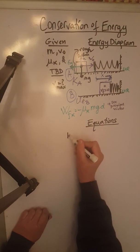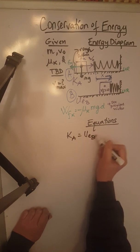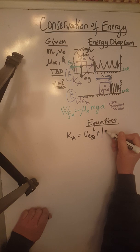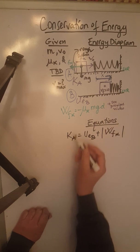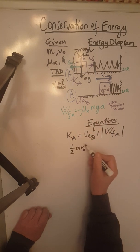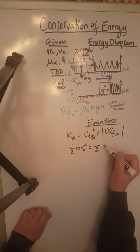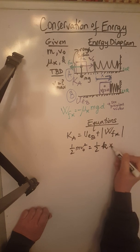So we are going to say that Ka equals UEB plus the absolute value of the work done by the force of friction, which is going to be 1 half little k x max squared plus the absolute value of the work done by the force of friction.